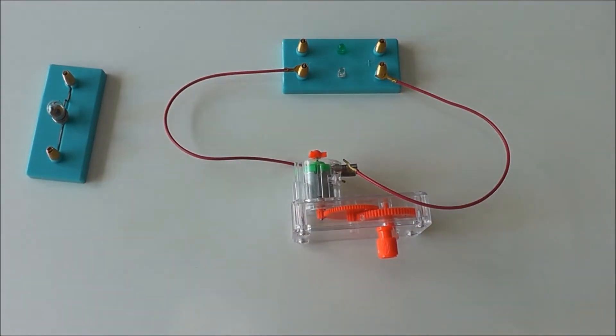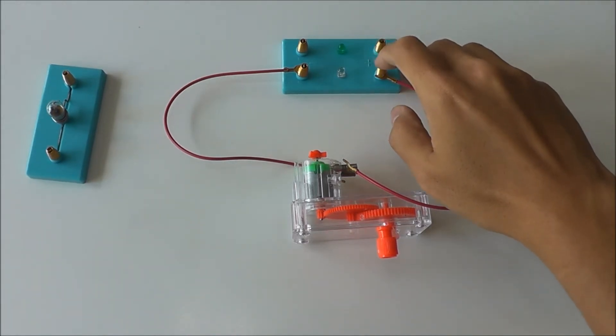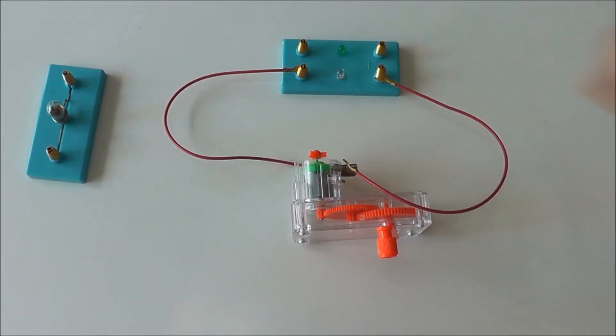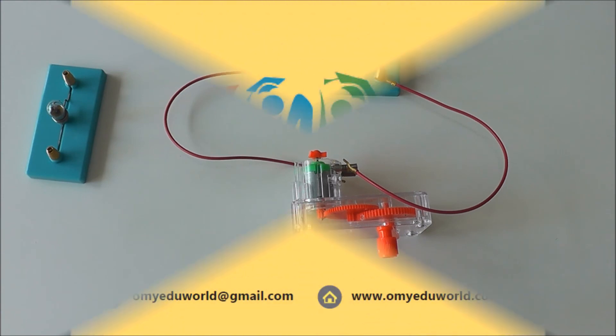This proves that the LED will only light up when the current is flowing in the correct direction such that this side is the positive terminal and this side is the negative terminal. That's it about this generator circuit. I hope you have enjoyed the lesson.